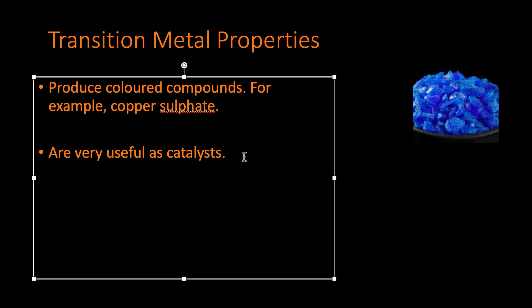Now lastly, they are very useful as catalysts. There are so many different chemical reactions which use transition metals as catalysts. One example is the Haber process, which is also in your spec and I'll cover that in another video. But the Haber process is where you combine nitrogen and hydrogen in order to form ammonia.